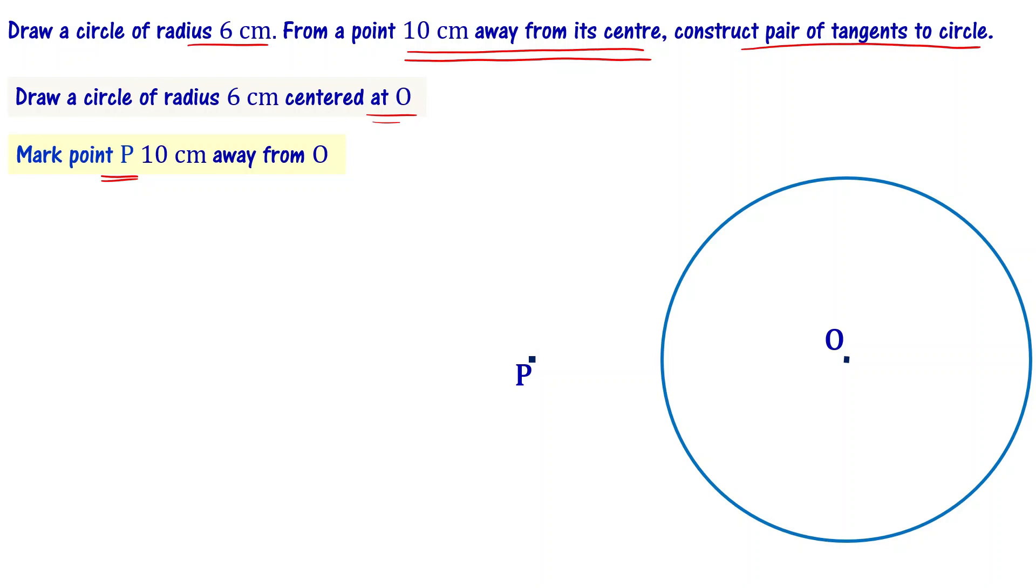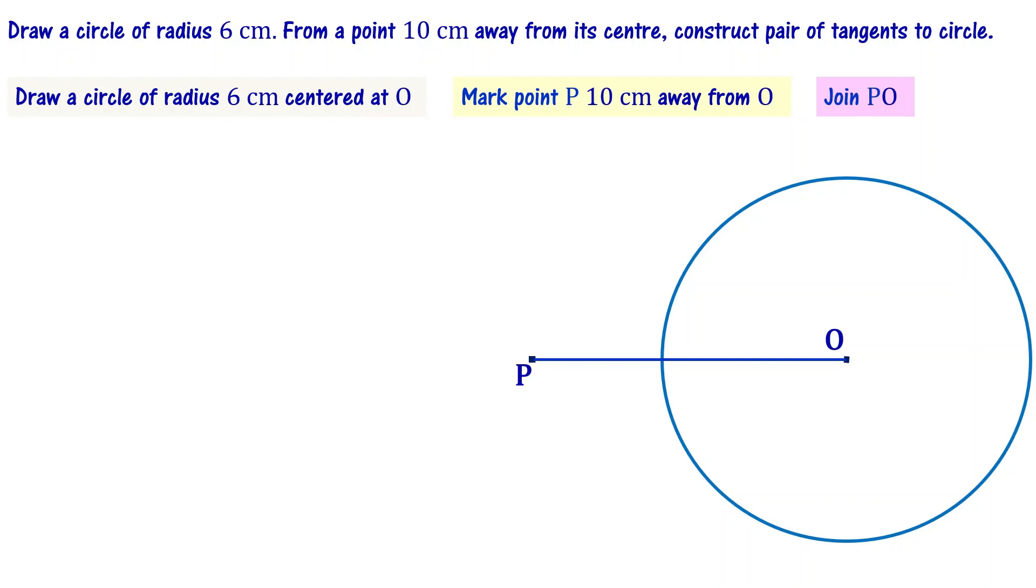Once you have this, we have to draw two tangents. First, join P and O. We have O, P in a line. You have to bisect it. We have to find a point on this. Then we draw a perpendicular bisector to line OP. Draw perpendicular bisector.